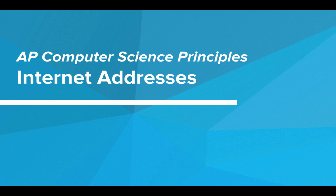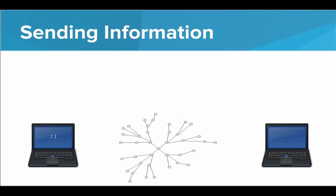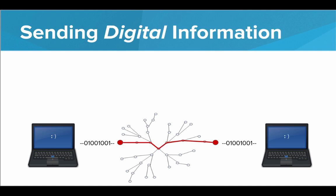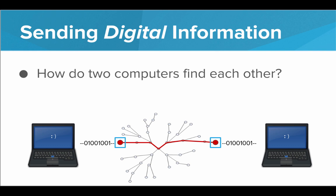In this video, we'll be talking about internet addresses. As we've seen, the core functionality of the internet is to send information from one computer to another. So let's say this computer is over at this end of the network, and this computer is over at this end of the network. We can encode that data as digital information and send it from point A to point B. The question is, how do these two computers find each other? How does computer A know where it should be sending these bits?